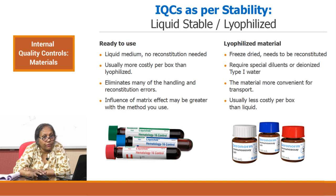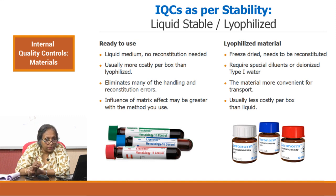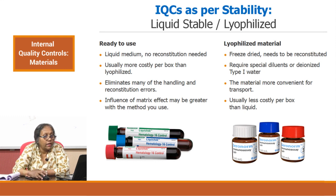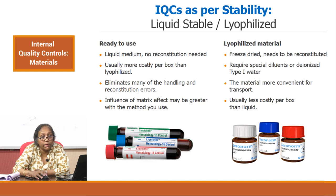There is one more way to classify controls — as per stability — either ready-to-use or lyophilized material. For ready-to-use material, it is generally in liquid medium and no reconstitution is needed. It is usually more costly per box than lyophilized material, but it eliminates many handling and reconstitution errors. However, the influence of matrix effects may be greater with the methods used — that is a negative point where liquid stable controls are concerned.